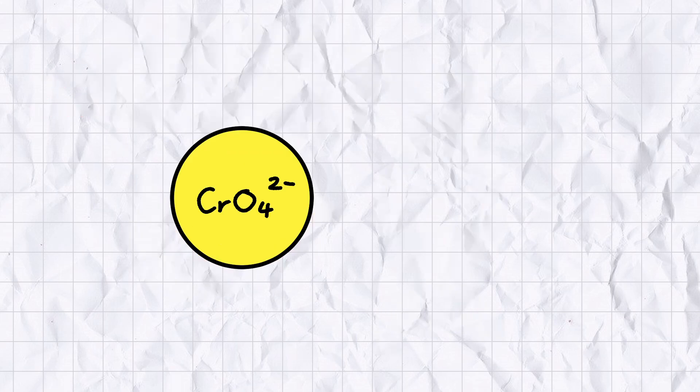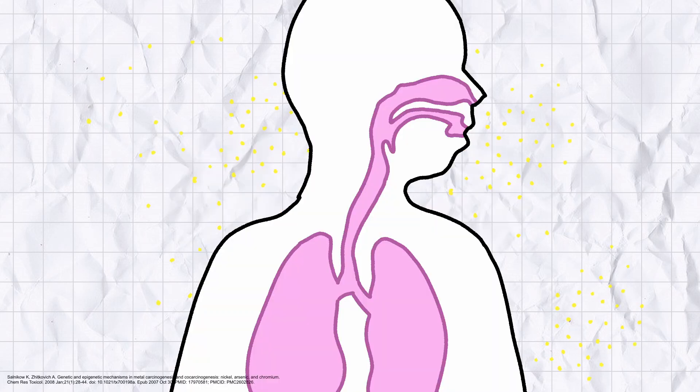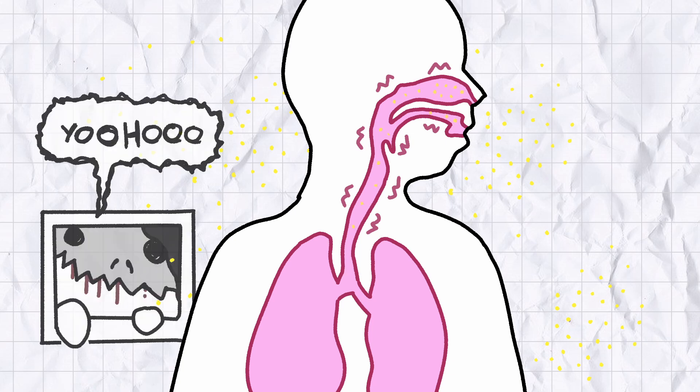Chromate ions share many chemical and structural properties with sulfate and phosphate ions, which are essential nutrients in all living organisms. If chromate ions are inhaled, they'll sneak into your cells through the same chemical pathways reserved for sulfate ions, sort of like a miniature great white shark flopping its way into an orphanage through the cat flap.